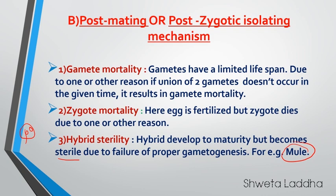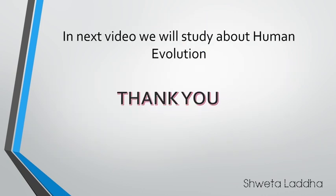So we studied variations, then natural selection, and then isolation — these three important factors are included in the modern synthetic theory of evolution. I hope you have understood. In the next video I will discuss about human evolution. Thank you.